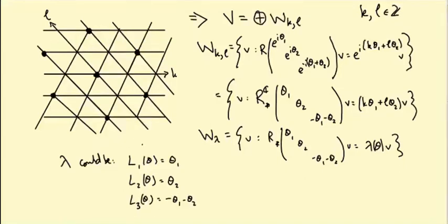Some particular lambdas: λ could be l1(θ) = θ1, it could be l2(θ) = θ2, and l3(θ) = θ3 = −θ1 − θ2, or any combination of these three. In the weight diagram: L1 is at K=1, L=0; L2 is up here; and L3 is at K=L=−1, down here. I'm just giving these lattice points the special names L1, L2, L3.